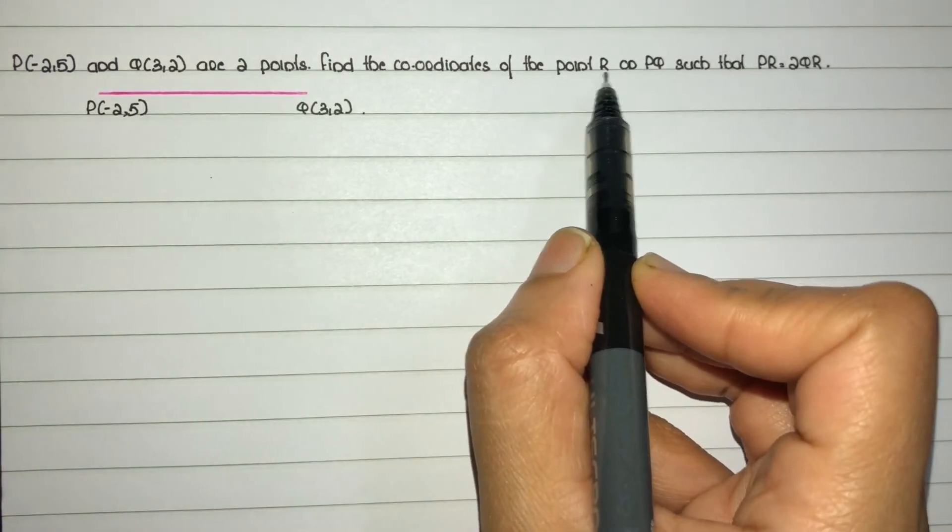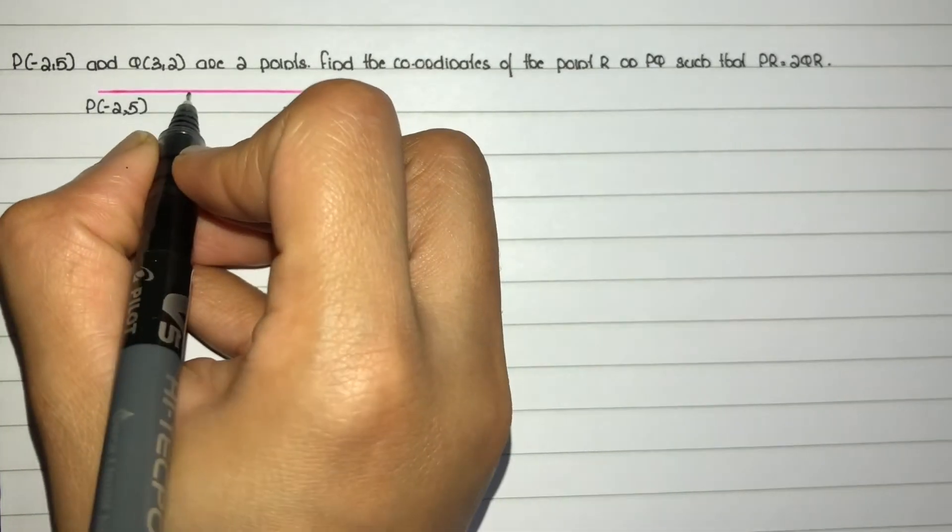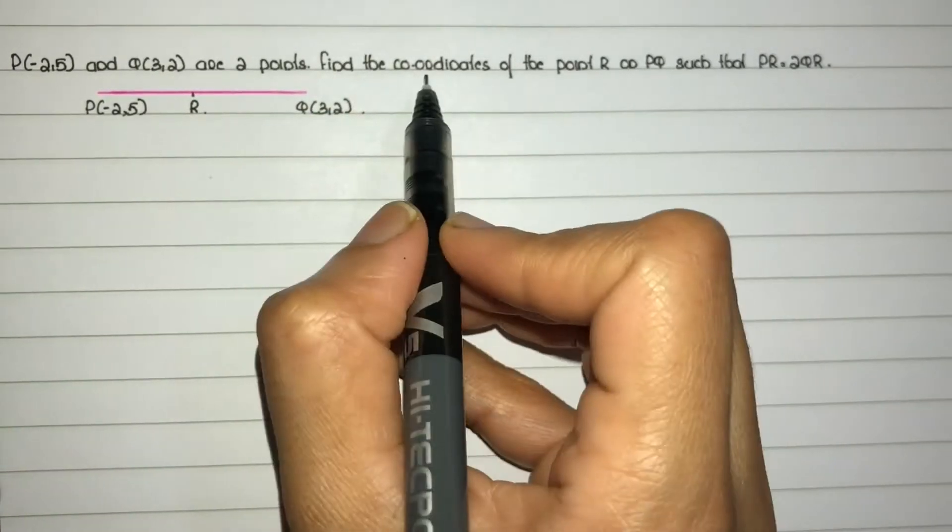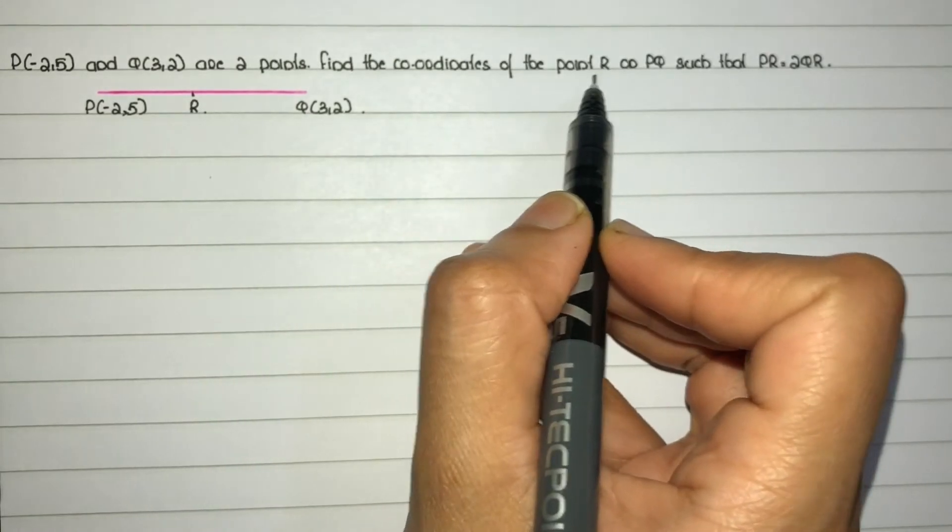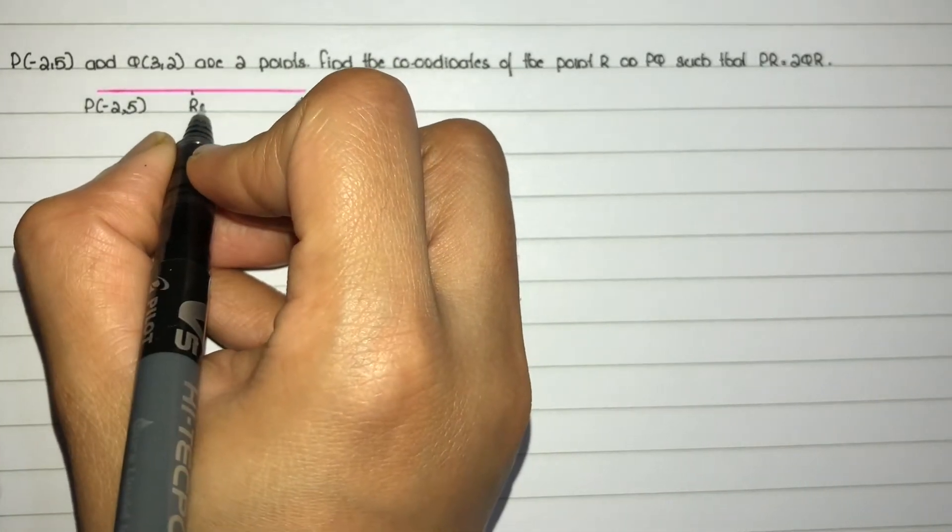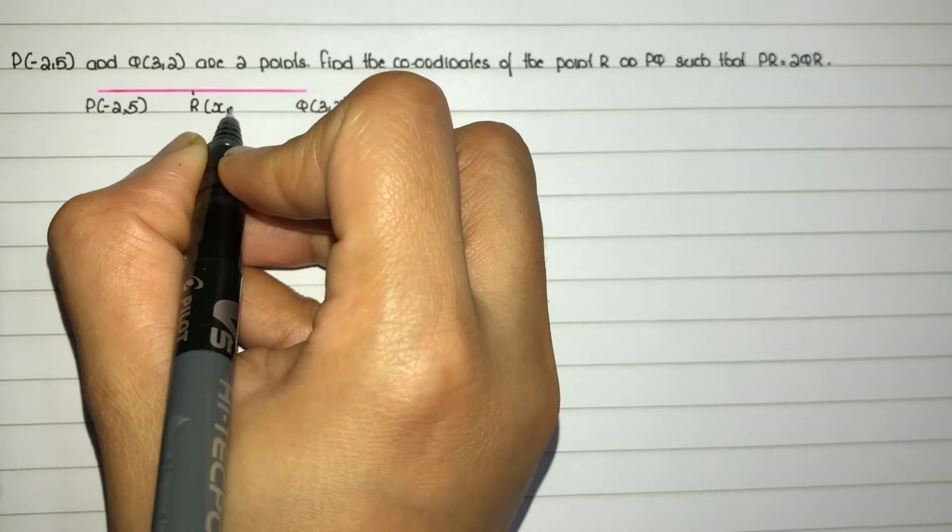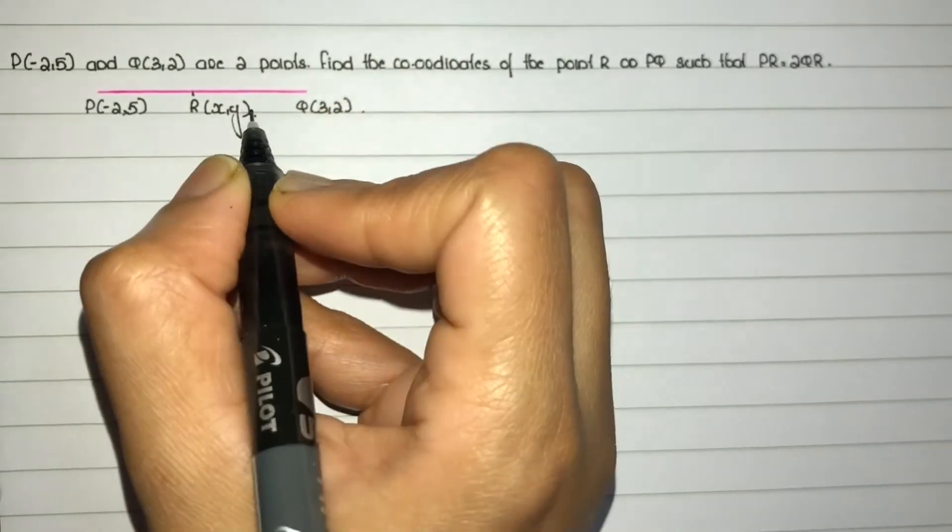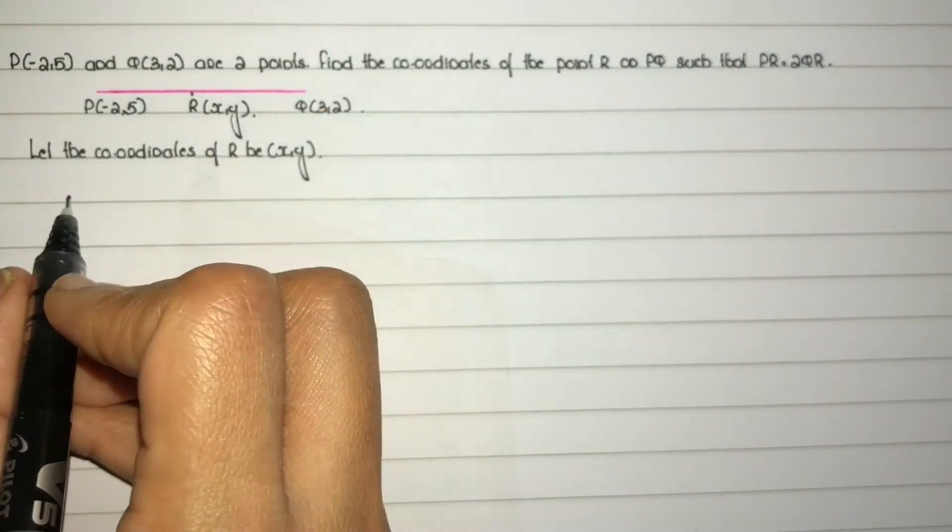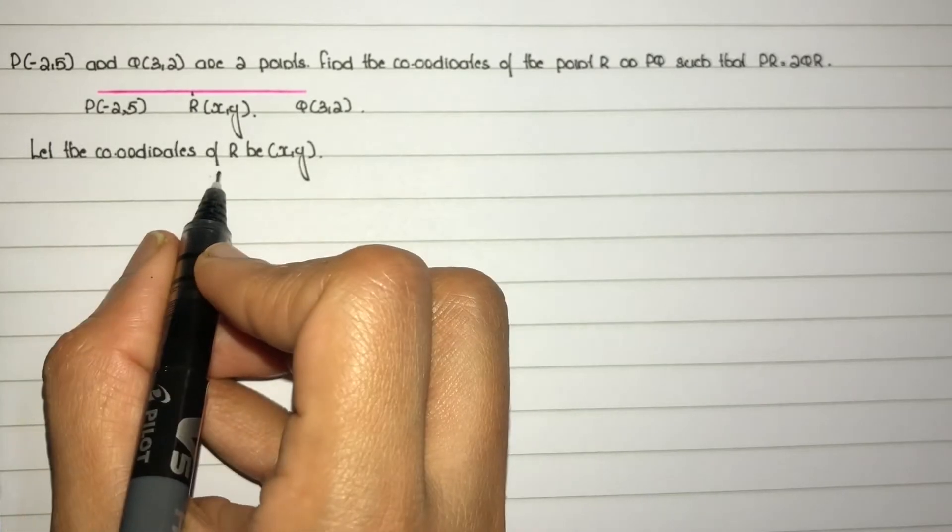R is a point on PQ, so mark point R. The question is to find the coordinates of point R. First step: let the coordinates of R be (x,y).